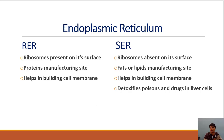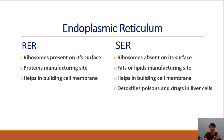So, endoplasmic reticulum is a network of membranes with tubes and tubules spread throughout the cytoplasm, transporting various materials required for the cell. Rough endoplasmic reticulum synthesizes proteins; smooth endoplasmic reticulum synthesizes lipids or fats — both helpful in building the cell membrane. Smooth endoplasmic reticulum also detoxifies toxins that enter our body through spoiled food or medicines.